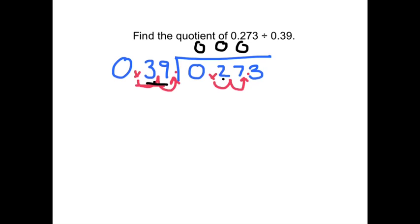Well, 39 is close to 40, and 273 is close to 280. And I would say, how many times does 4 go into 28? I would say about 7. So let's try 7 times.